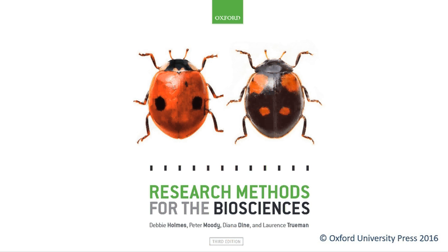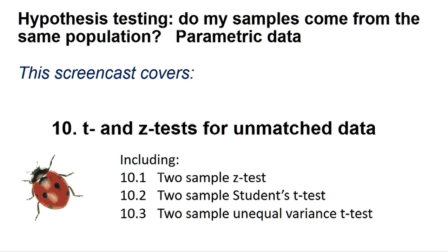Welcome to another Research Methods for the Biosciences screencast for Minitab. This screencast covers Section 10: T and Z tests for unmatched data, and includes Section 10.1 two-sample Z tests, Section 10.2 two-sample Student's t-tests, and Section 10.3 two-sample unequal variance t-tests.